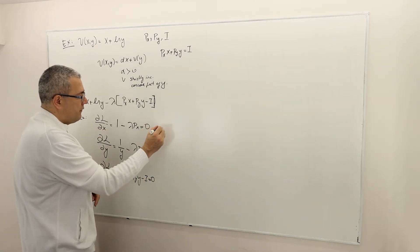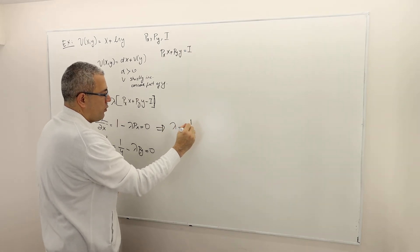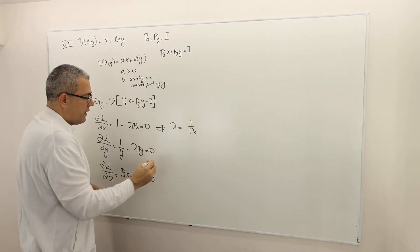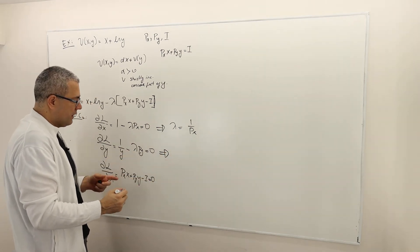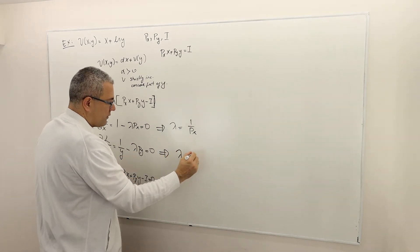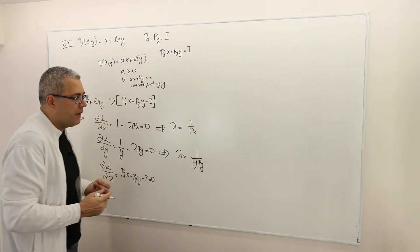So if you simplify this, this is what you're going to get. Lambda equals one over px. If you simplify this, meaning just send the lambda py to the other side, you're going to get lambda equals one over y·py.